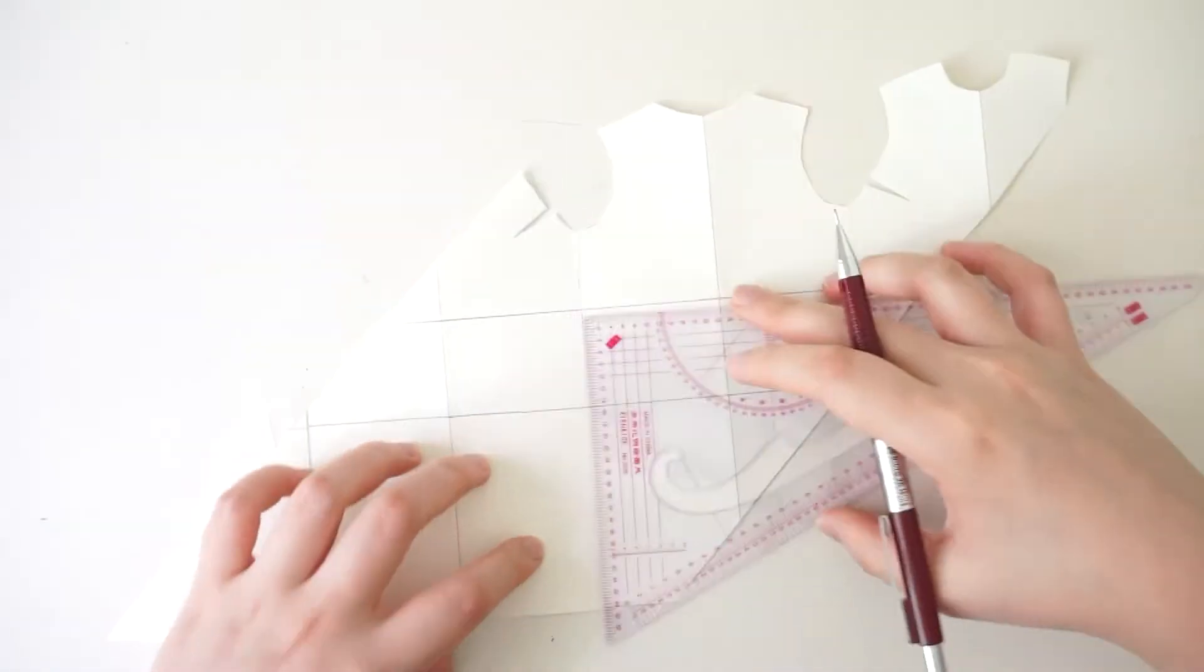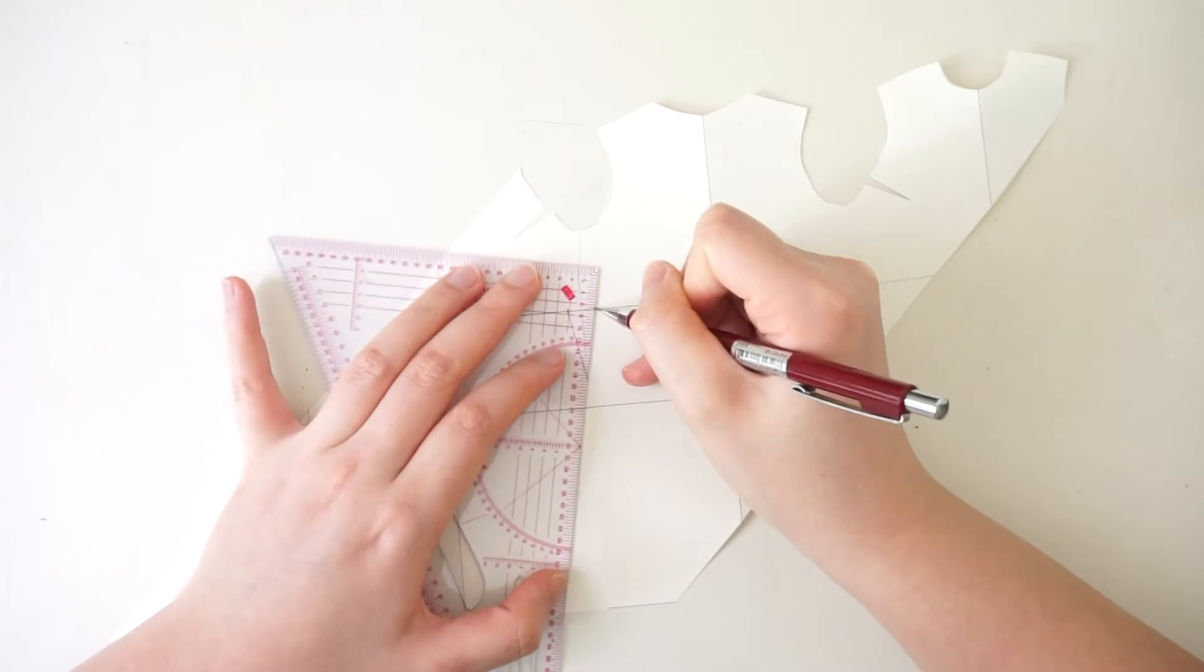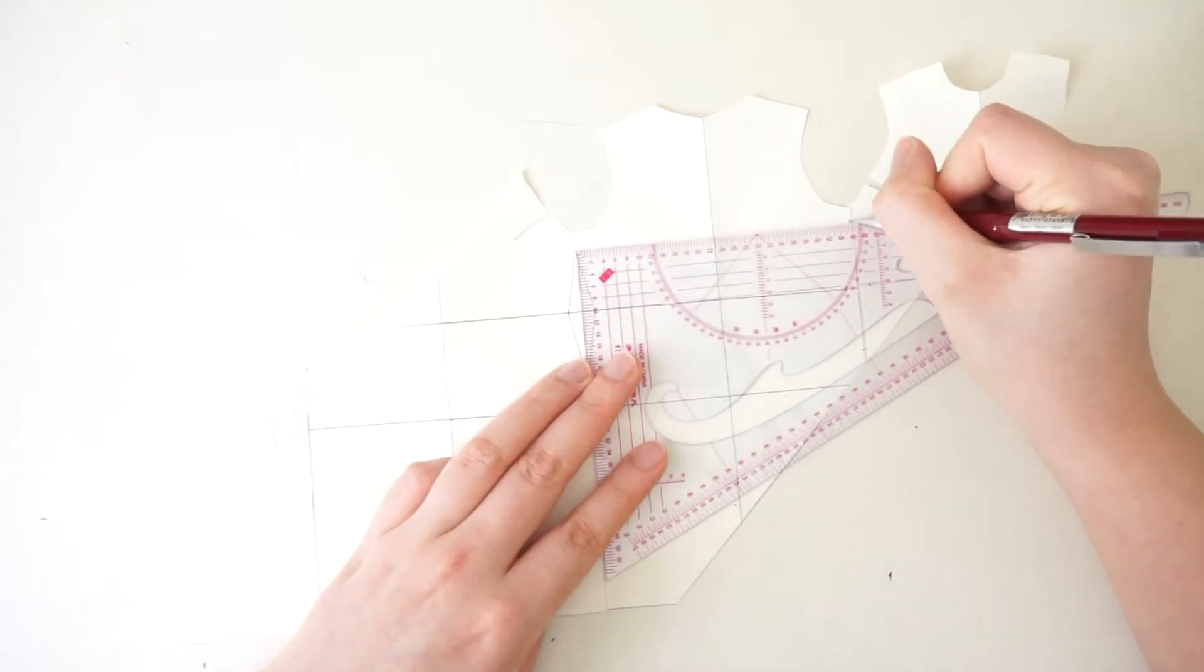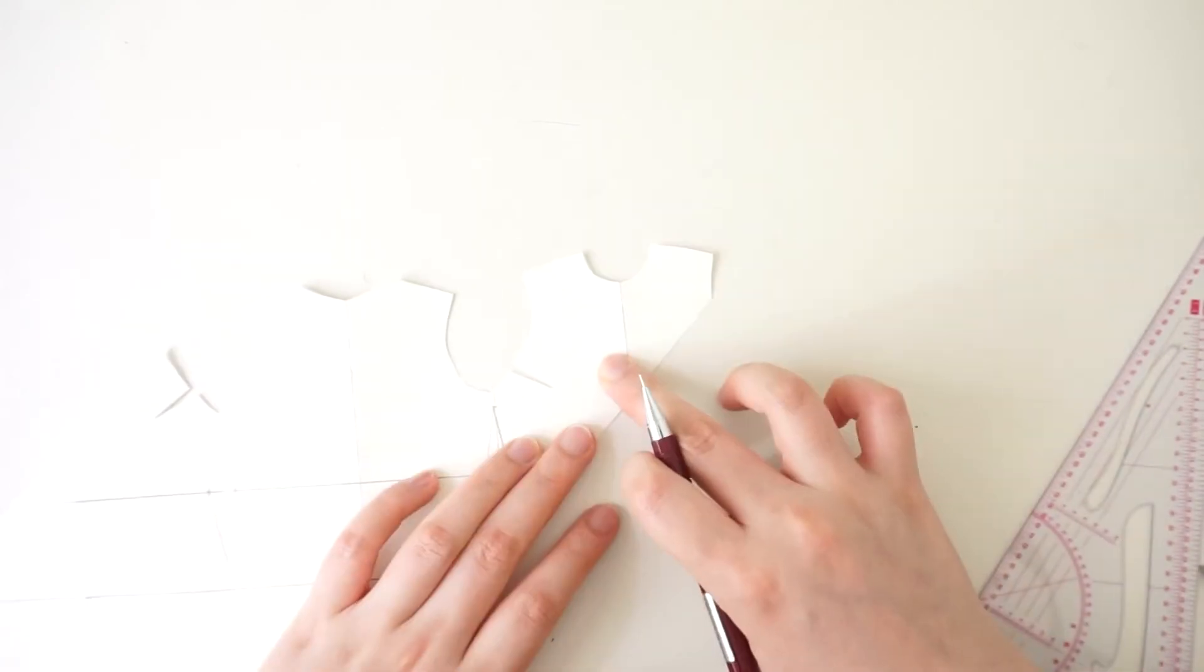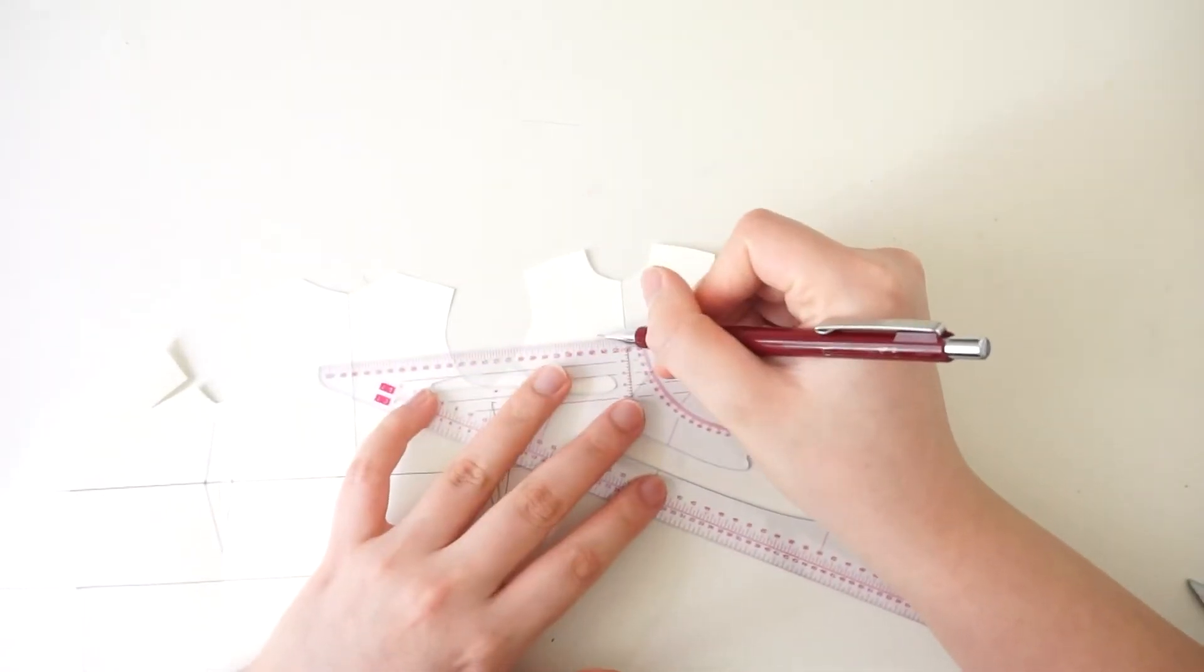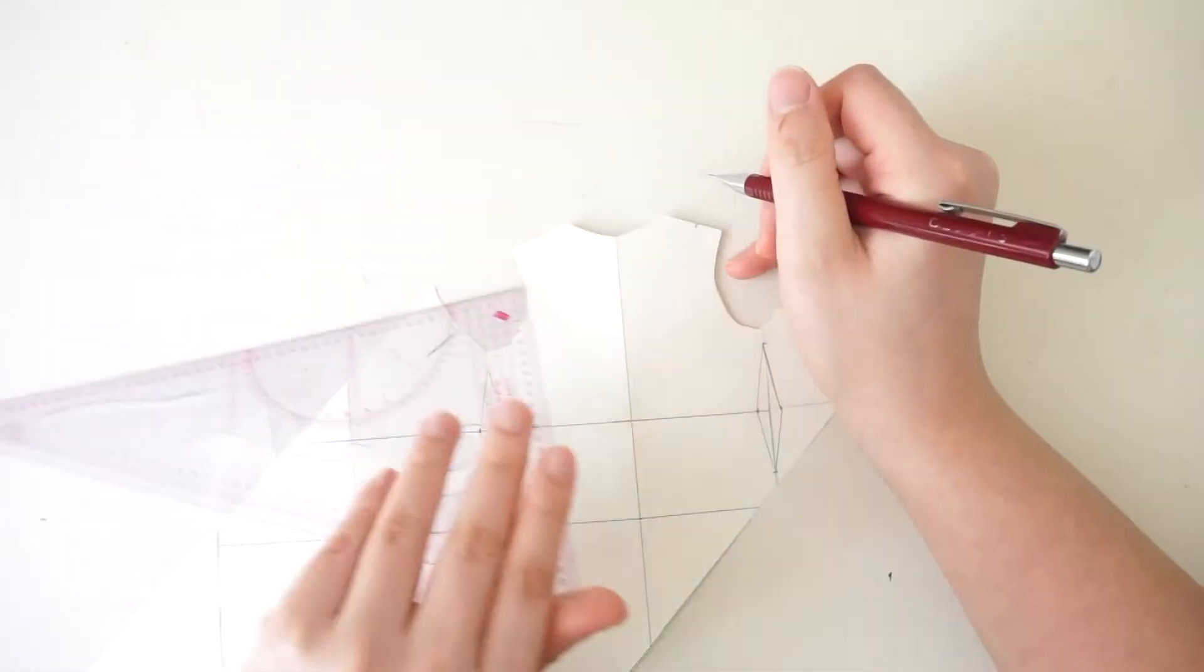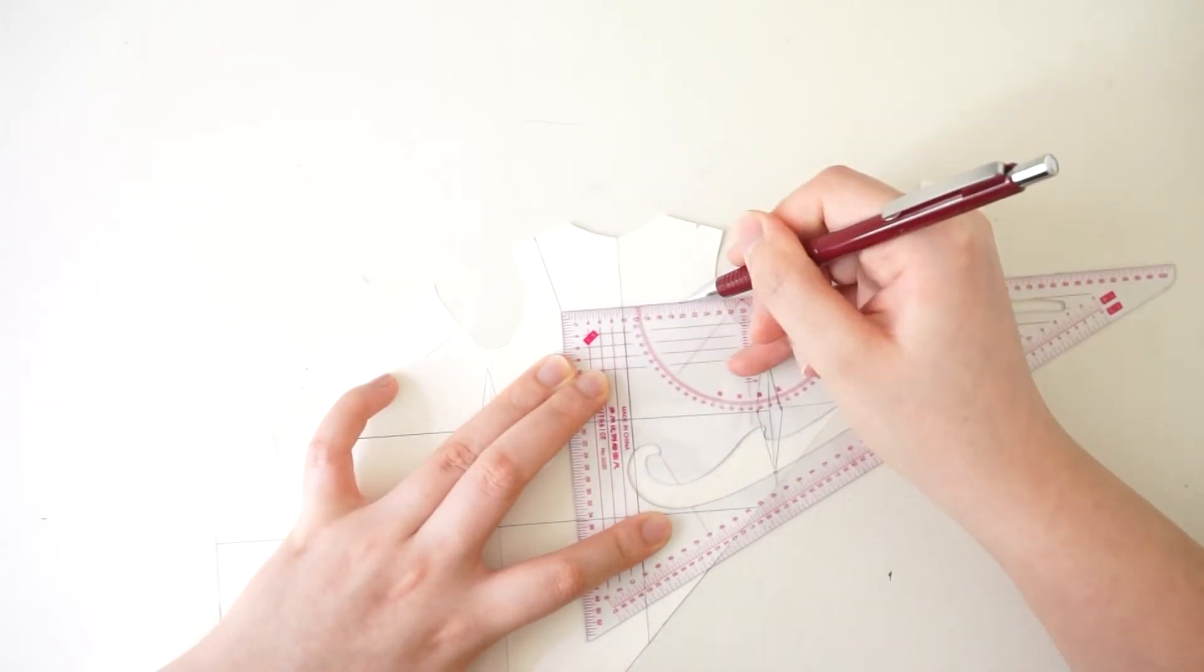I like my waist and bust slightly defined, so I make fisheye darts of 4cm wide on both original side seams and keep the original bust darts. Now shape the front and back neckline. On the original dress, the front neckline is a big round shape and the back neckline is a square shape with straight edges. I just do the same shapes on my pattern.